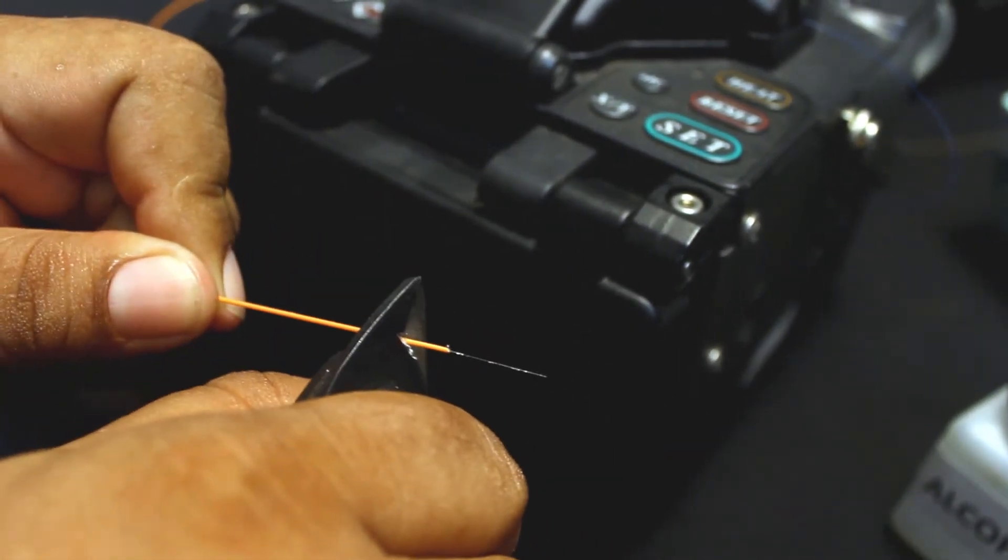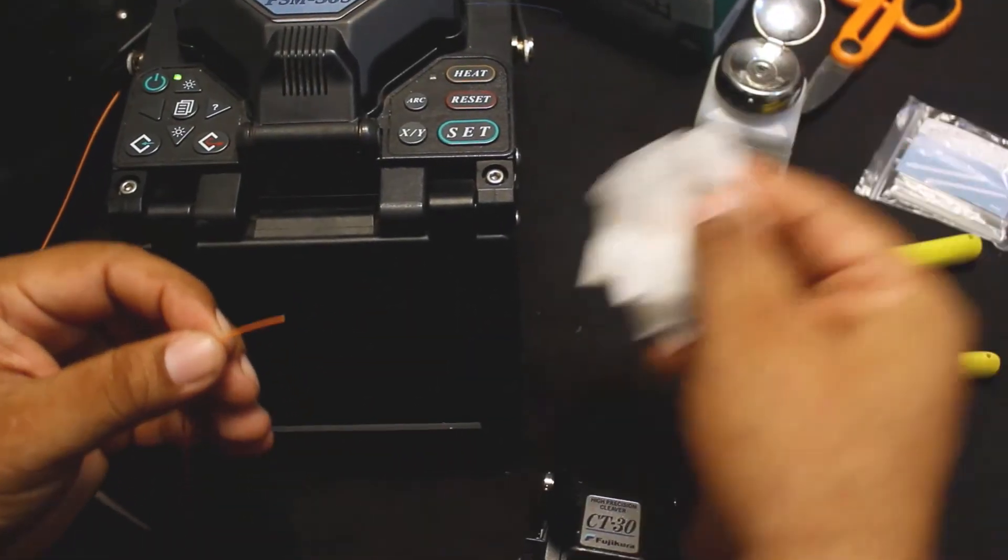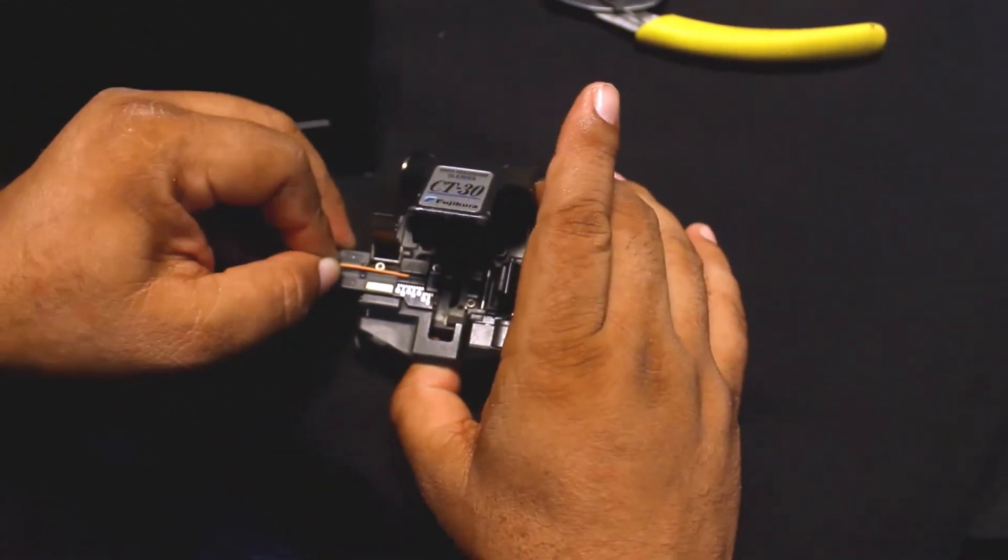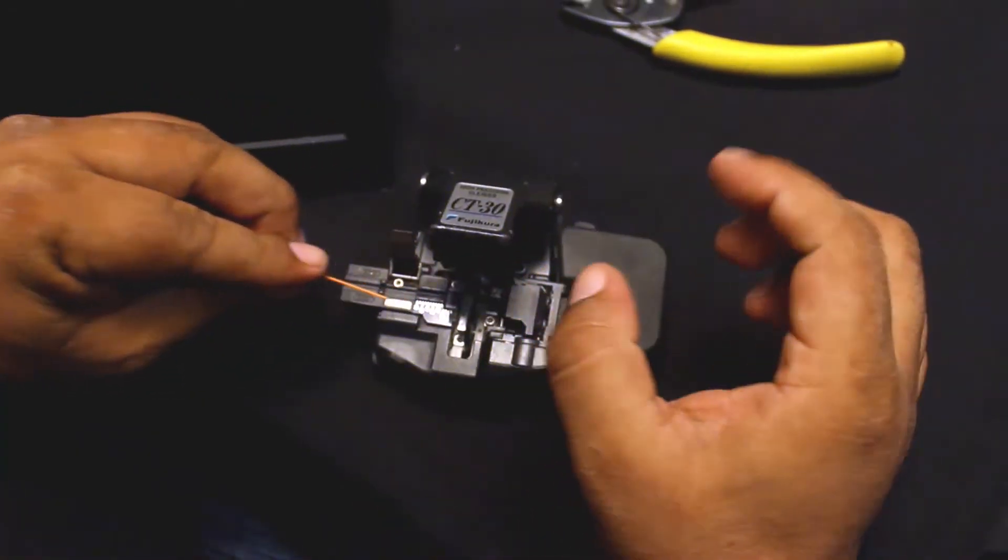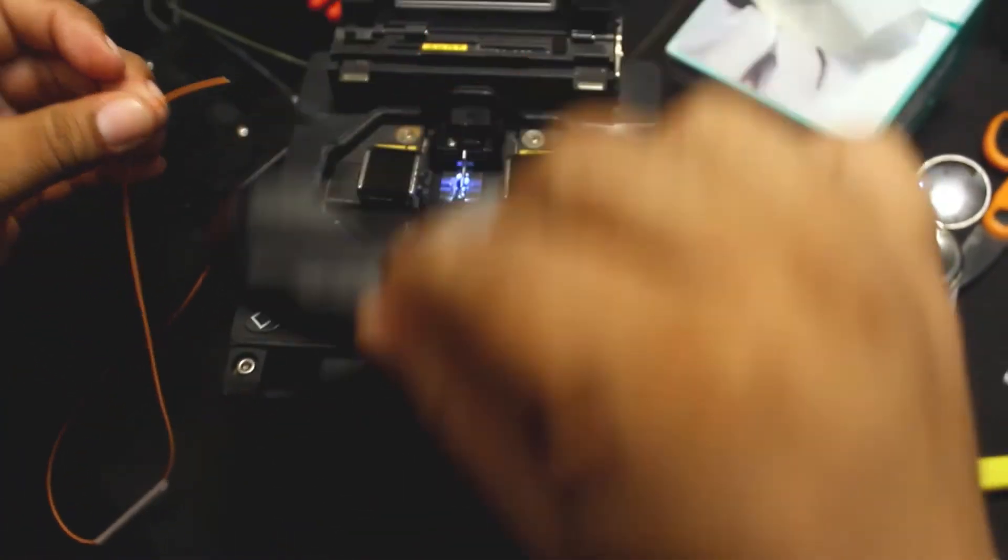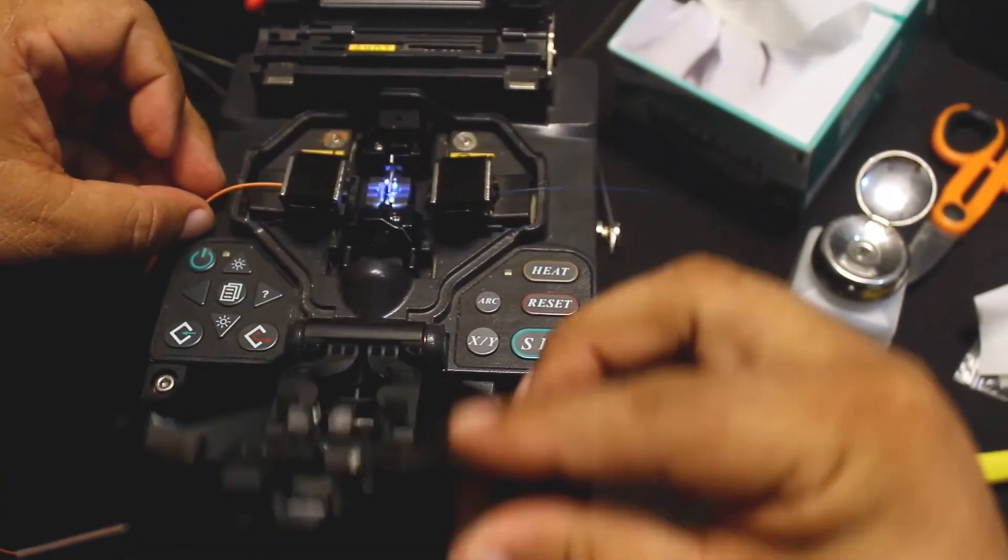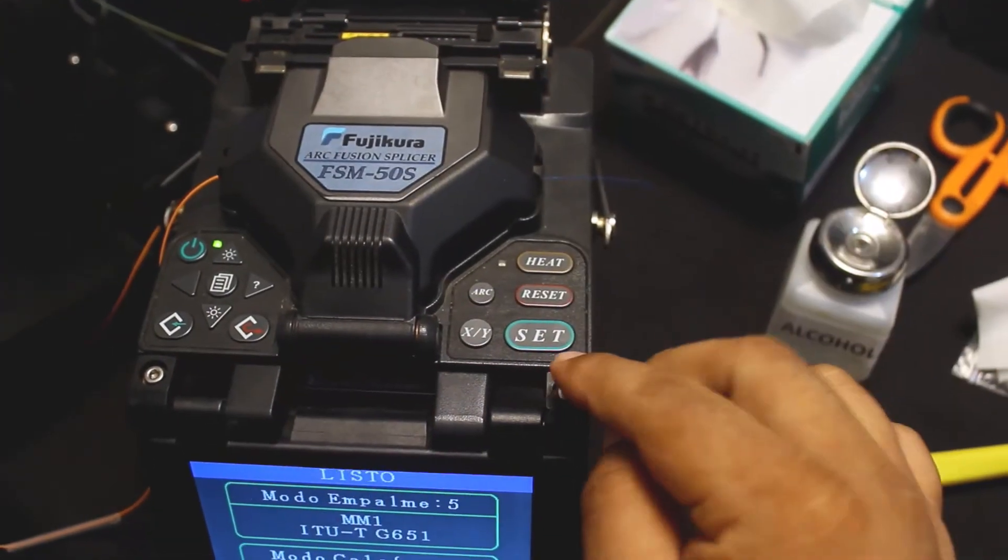Remove the buffer layer with the stripper. Clean the fiber with an alcohol pad to remove any dirt. Place the fiber in the cleaver and cut. Place the fiber into the guide close to the electrodes, making sure it doesn't touch the other fiber, and hold it with the clamps.